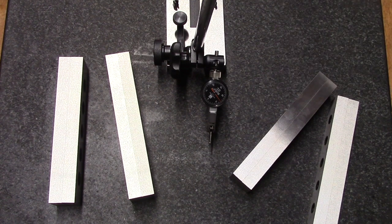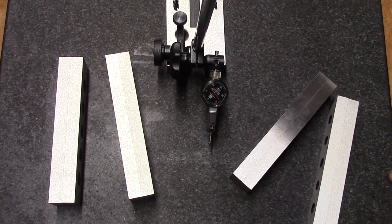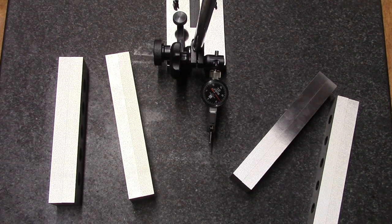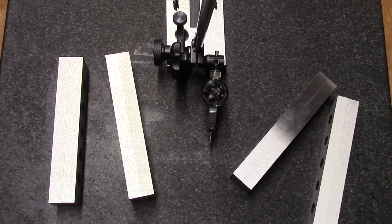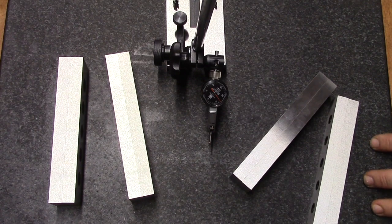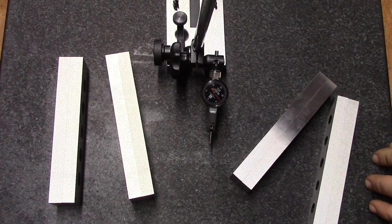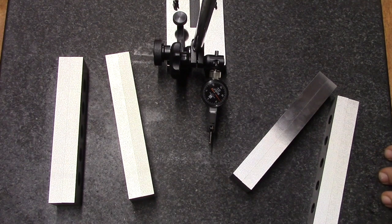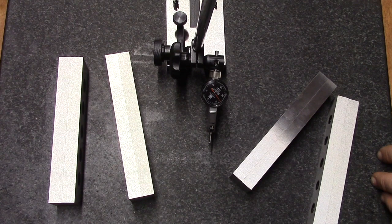Today what we're going to do with these parallels is test them with two different indicators. I have a Mitutoyo indicator that reads down to tenths, .0001 inches. We're going to test the height and parallelism of these parallel sets to see if they match what Grizzly claims. Grizzly claims that they should be within three tenths on height and two tenths of parallelism.